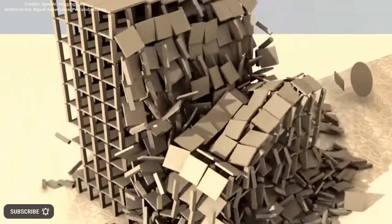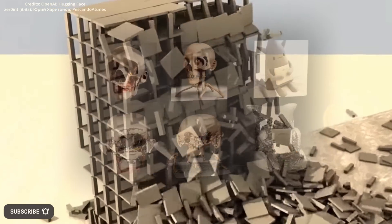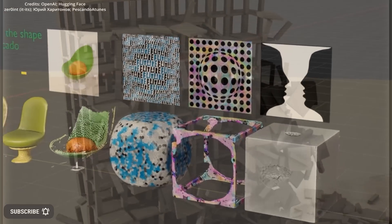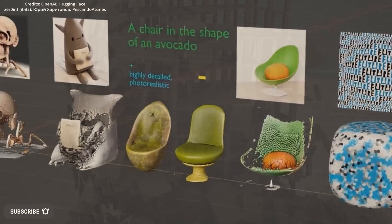Point E utilizes a different machine learning model called Glide, which, when given a text directive, generates a low-resolution point cloud that resembles the input text prompt.